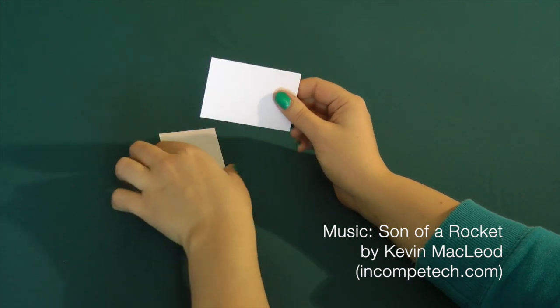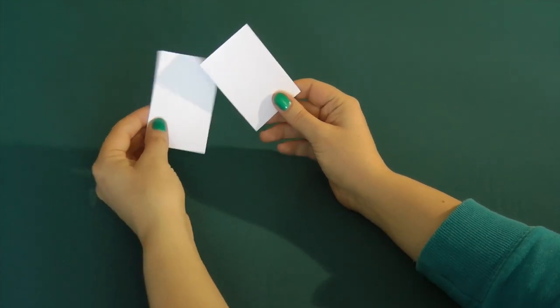These are the cards we'll be using to build the Menger sponge. First you'll need to fold the cards.